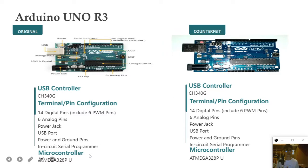Both the original and counterfeit Arduino UNO R3 use the microcontroller ATmega328PU, which is the same for both versions.